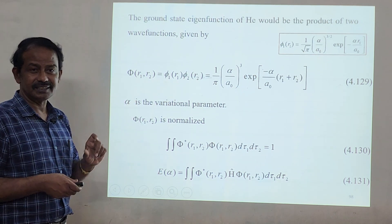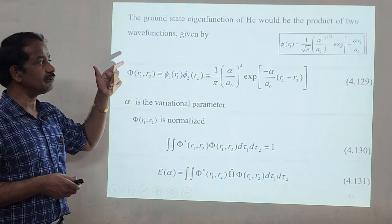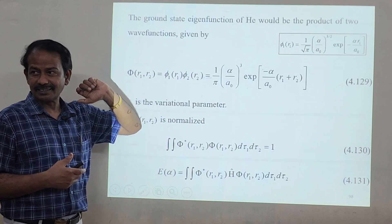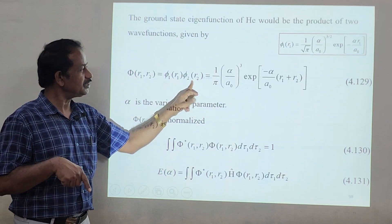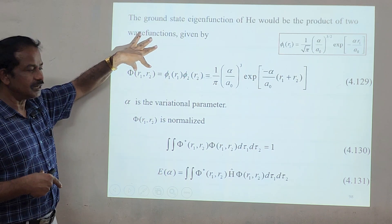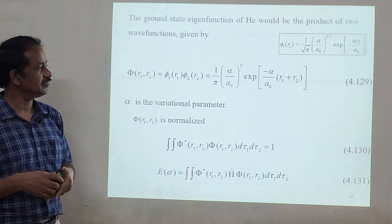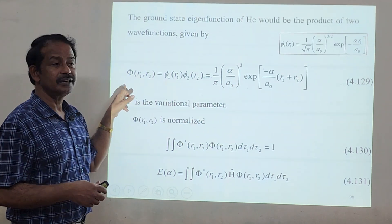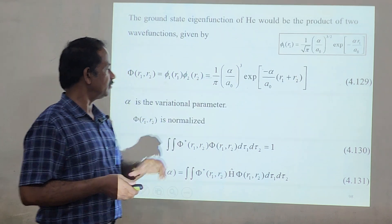For the variation method, we guess a trial wave function. We already guessed the wave function for the hydrogen atom for the first electron, and similarly for the second electron. Multiplying these two gives the complete trial wave function for the helium atom. This gives the complete wave equation for the helium atom for two electrons, where alpha is the variation parameter.